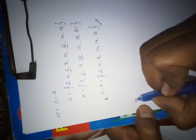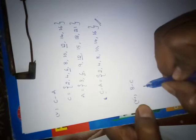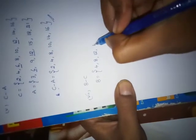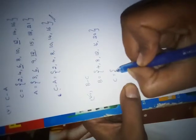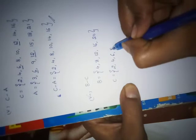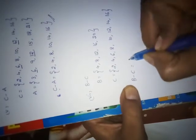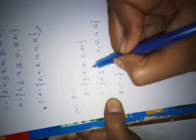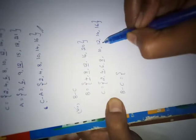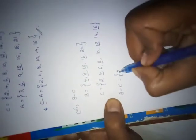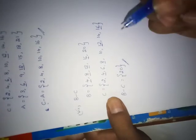And the next one is B minus C. What are the elements in B? 4, 8, 12, 16 and 20. And the elements in C: 2, 4, 6, 8, 10, 12, 14, 16. They asked B minus C — underline the common elements: 4, 8, 12 and 16 are common. Then the remaining elements in B — only 20. That is your answer. If there are no common elements, we represent it as a null set.